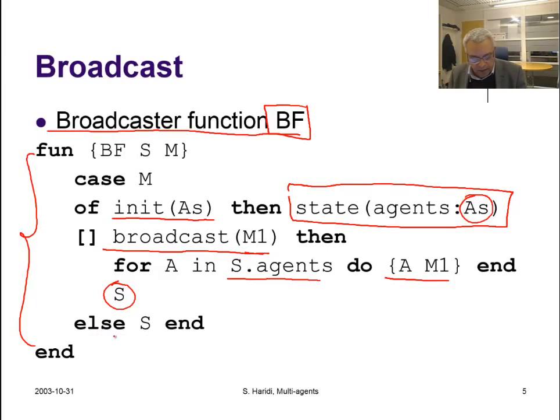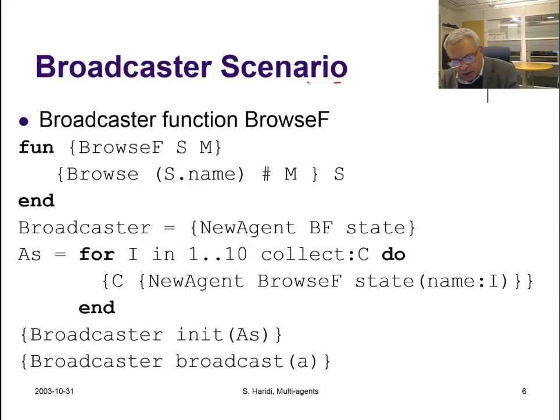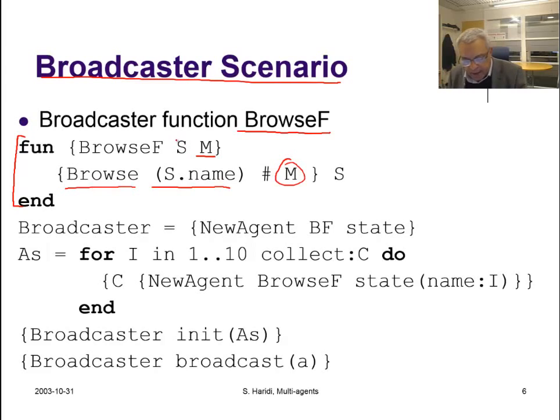So here is a broadcaster scenario, just to get an idea about how to do things. We define first a browser agent, we call it BrowseF. What a browser agent does—this is the state transition function of the browser agent. The browser agent basically does only one thing. To understand this properly, we have to understand what is the state of a browser agent. The state of the browser agent has a name, and when it gets a message M, it browses the pair consisting of the name of the browser and the message.